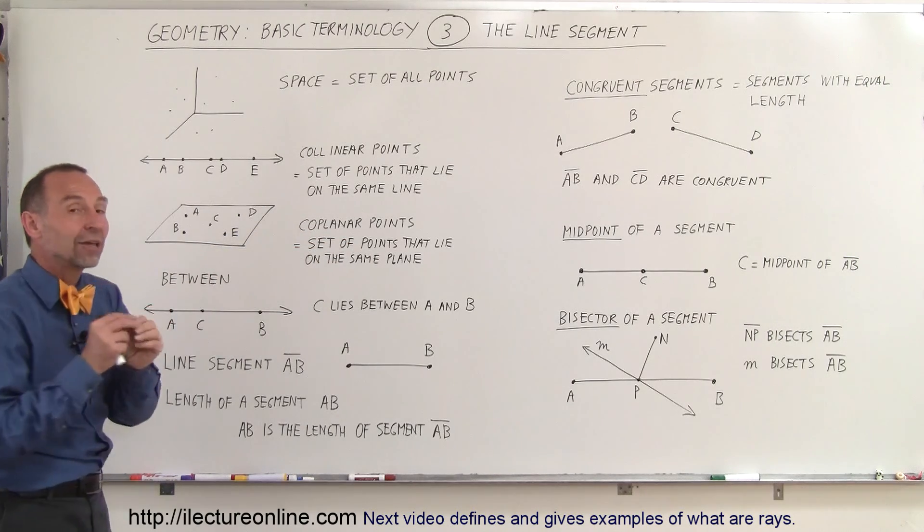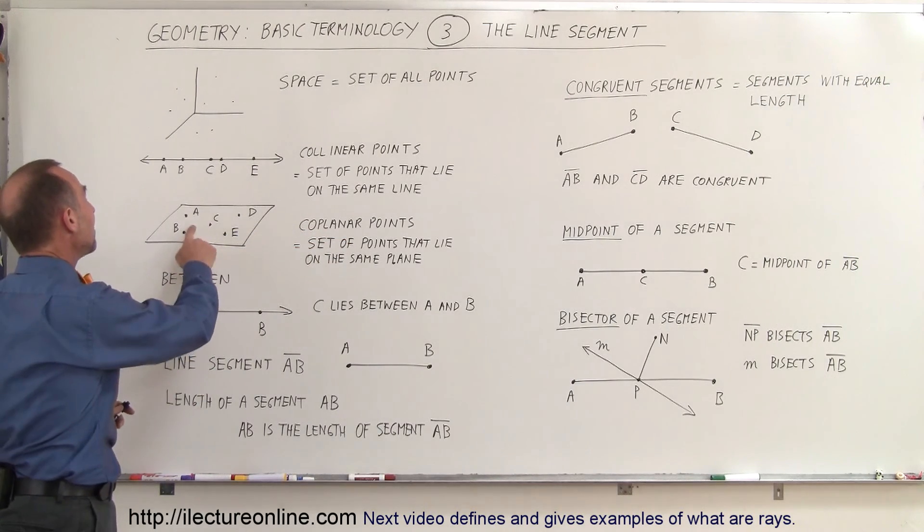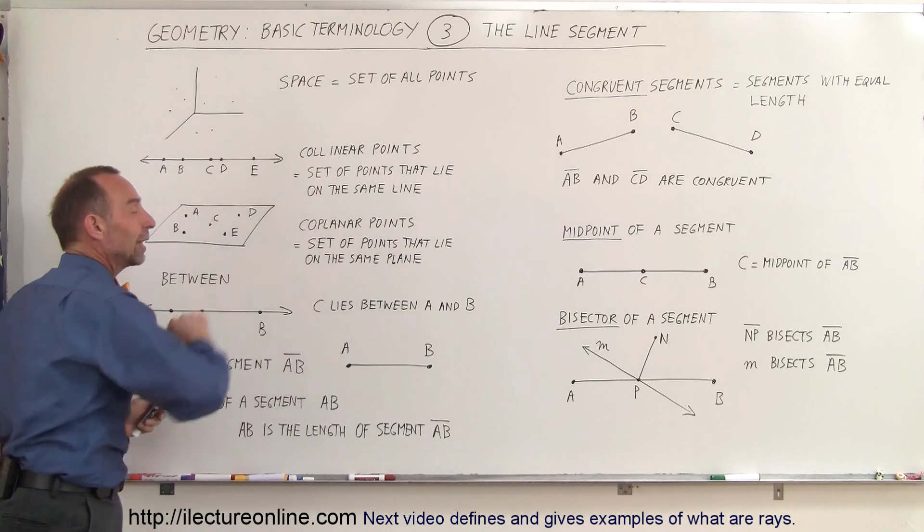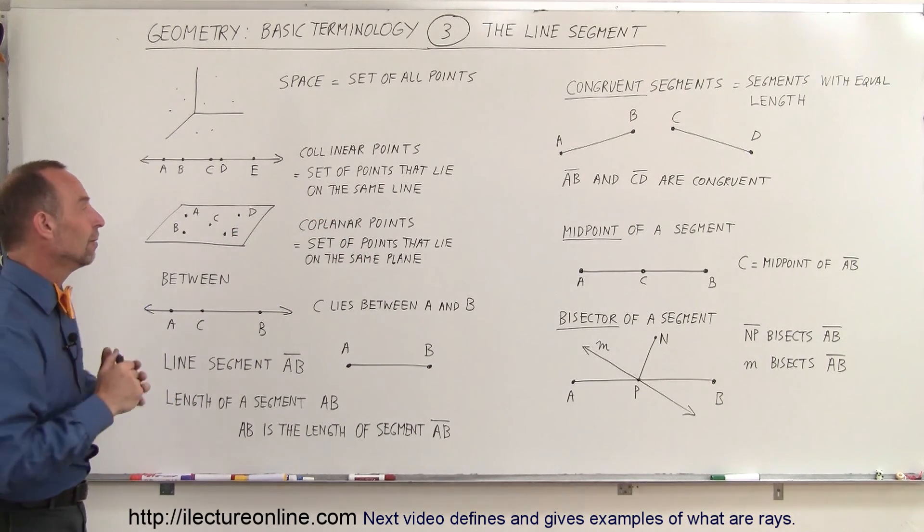Coplanar points are points that lie on the same plane. Here you can see that A, B, C, D, and E are all points that are on the same plane; therefore they're called coplanar points.